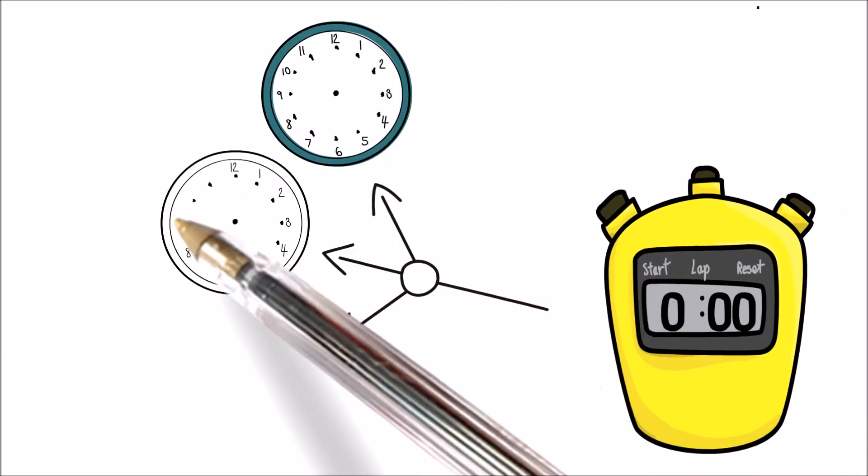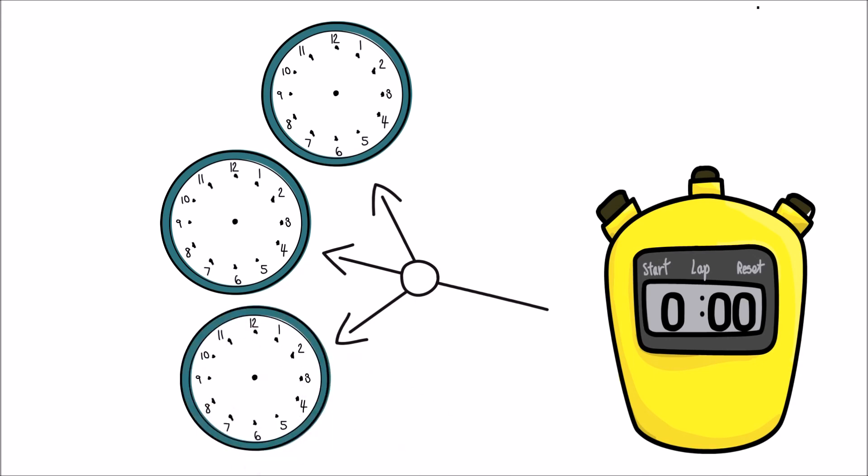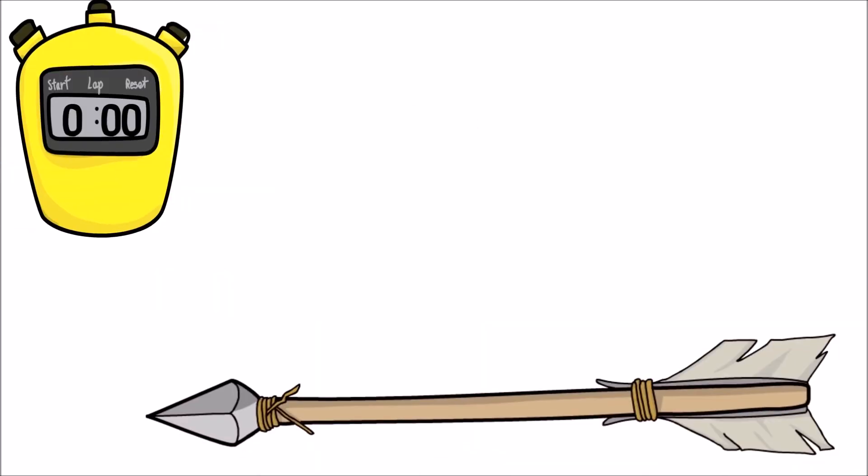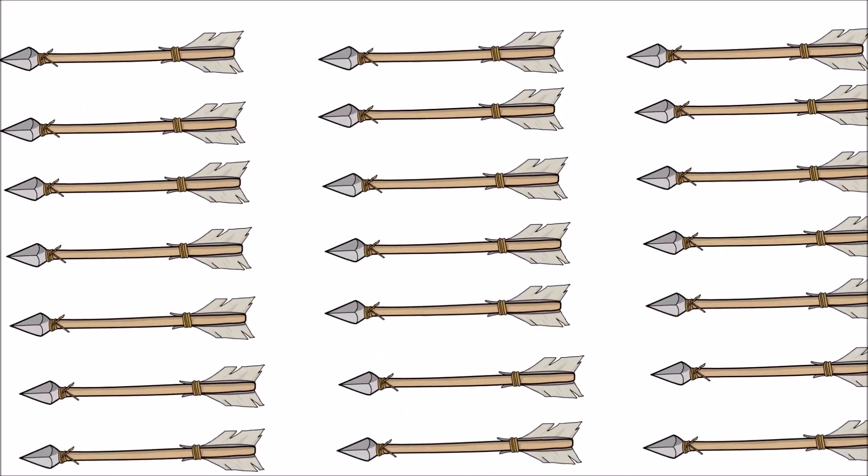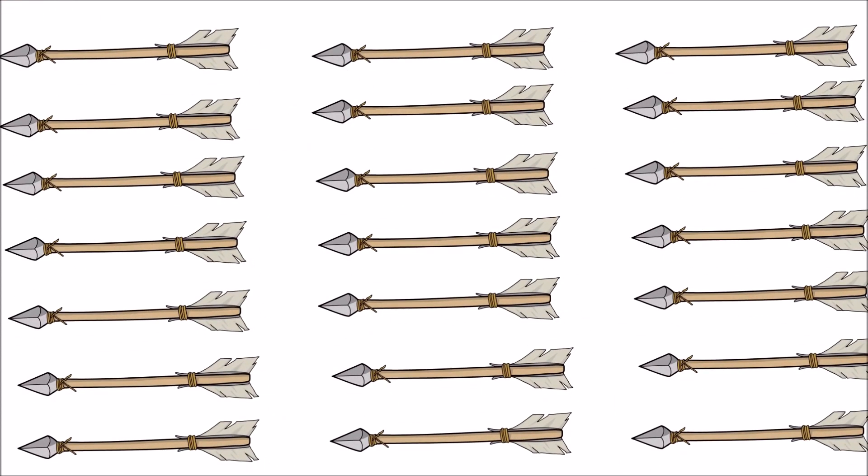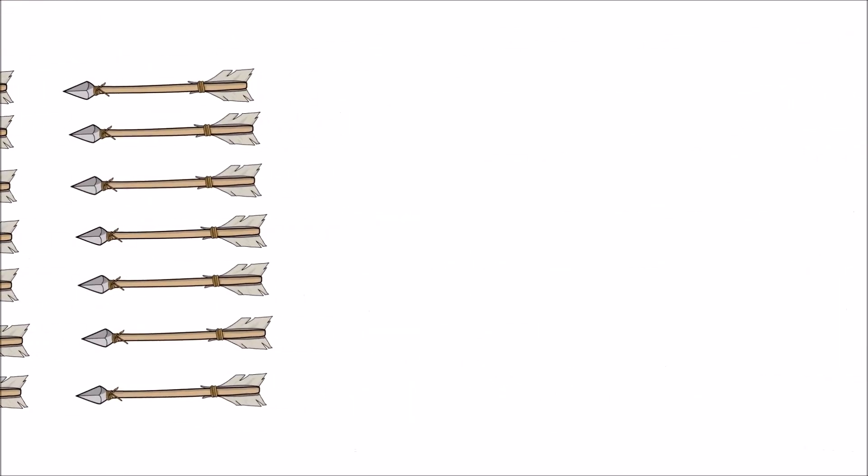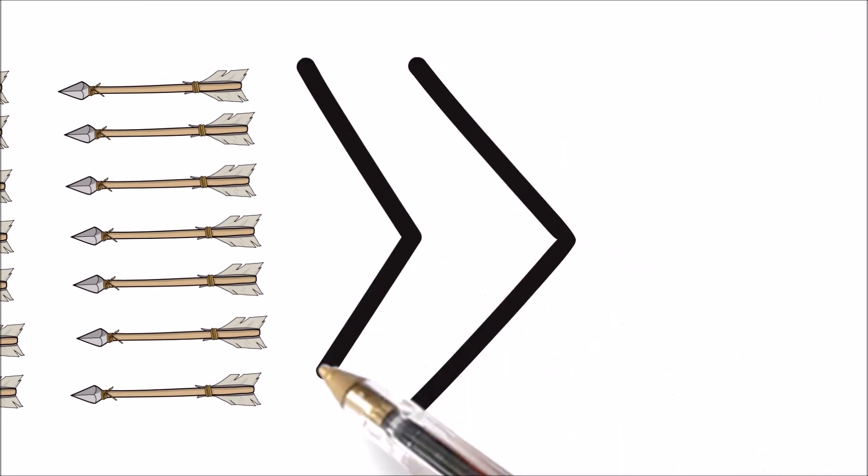Because time is made up of single instants, and it can't move to where it is now because it's already there. So, for that instant in time, the arrow must be stationary. But because all time is compromised entirely of instants, in every one of which the arrow must also be stationary, then the arrow must in fact be stationary the entire time.